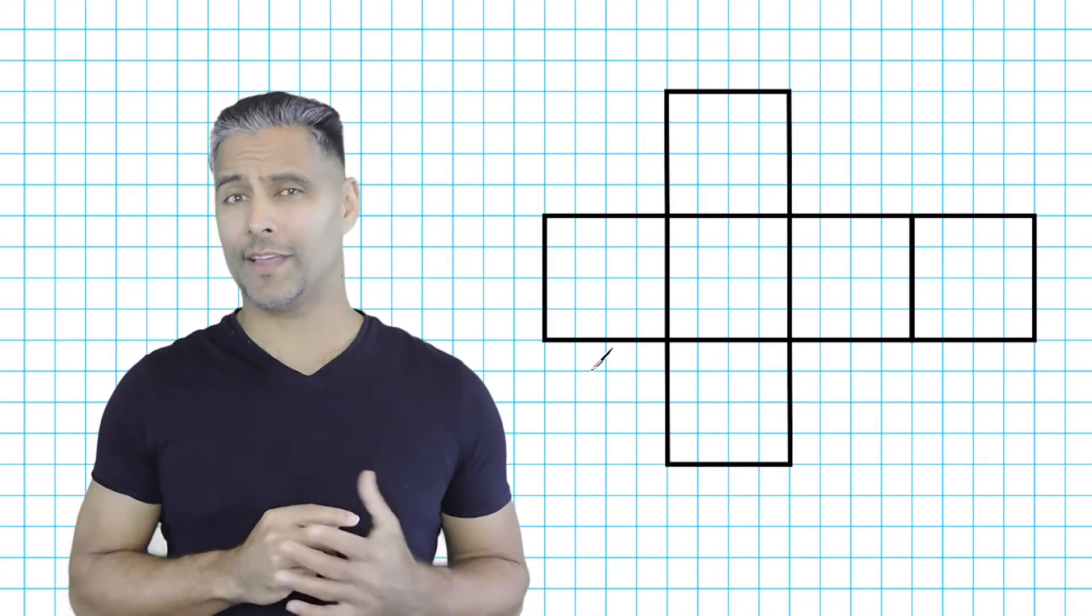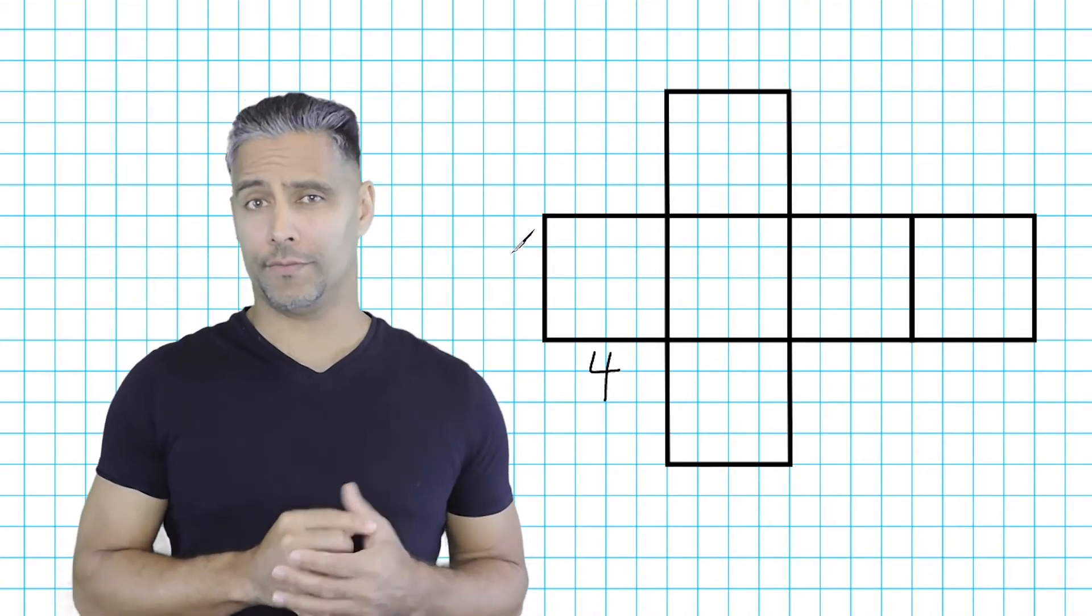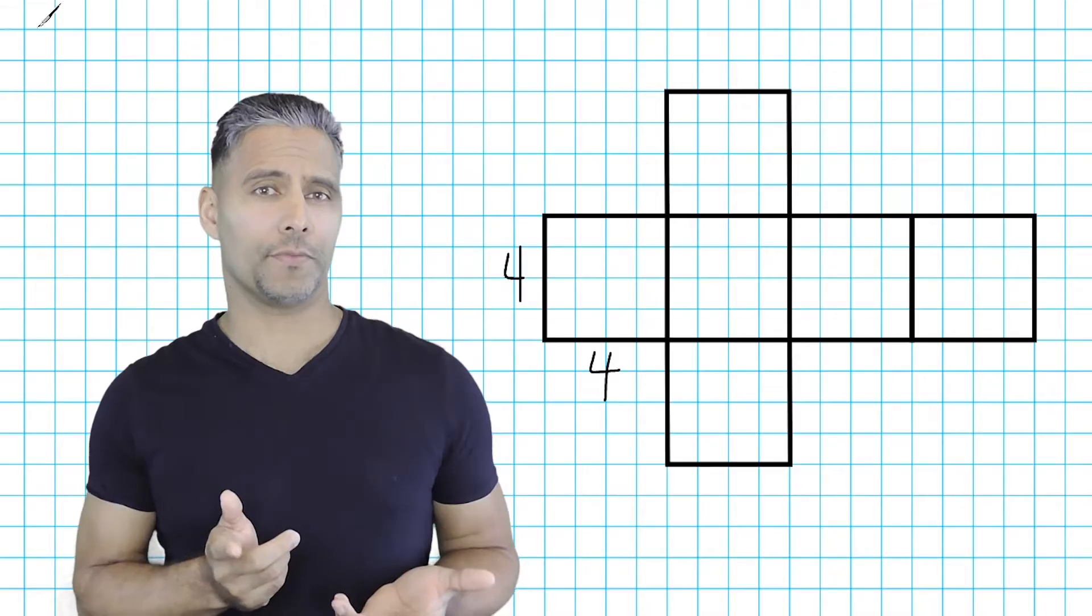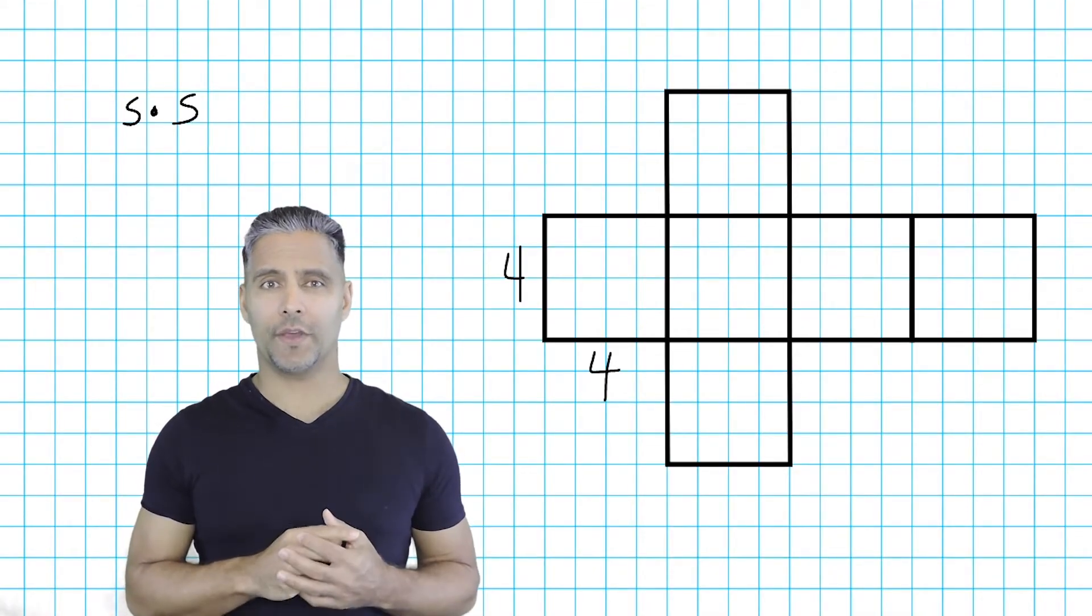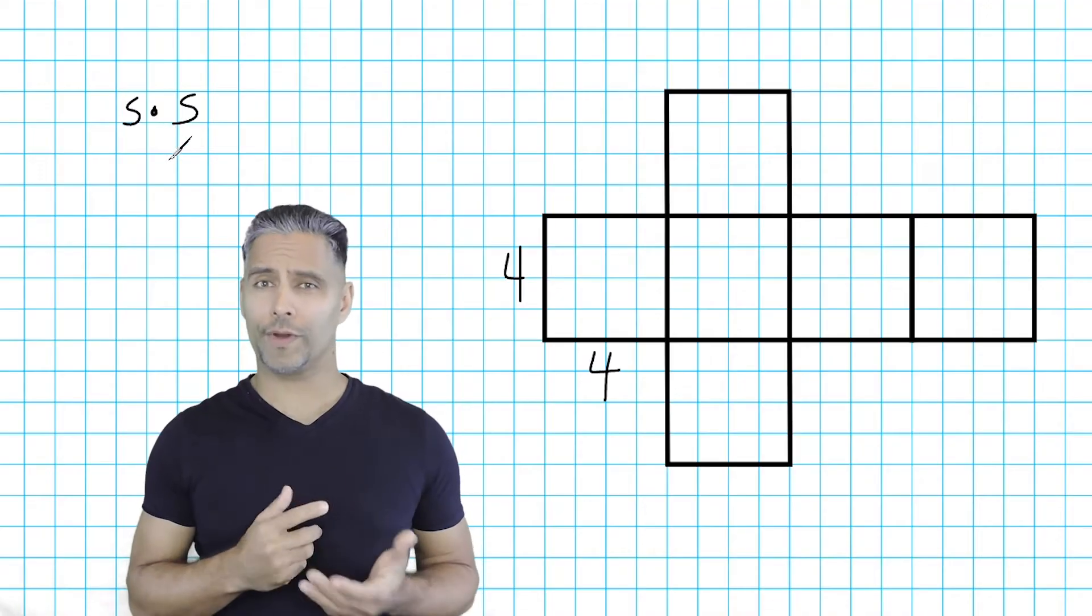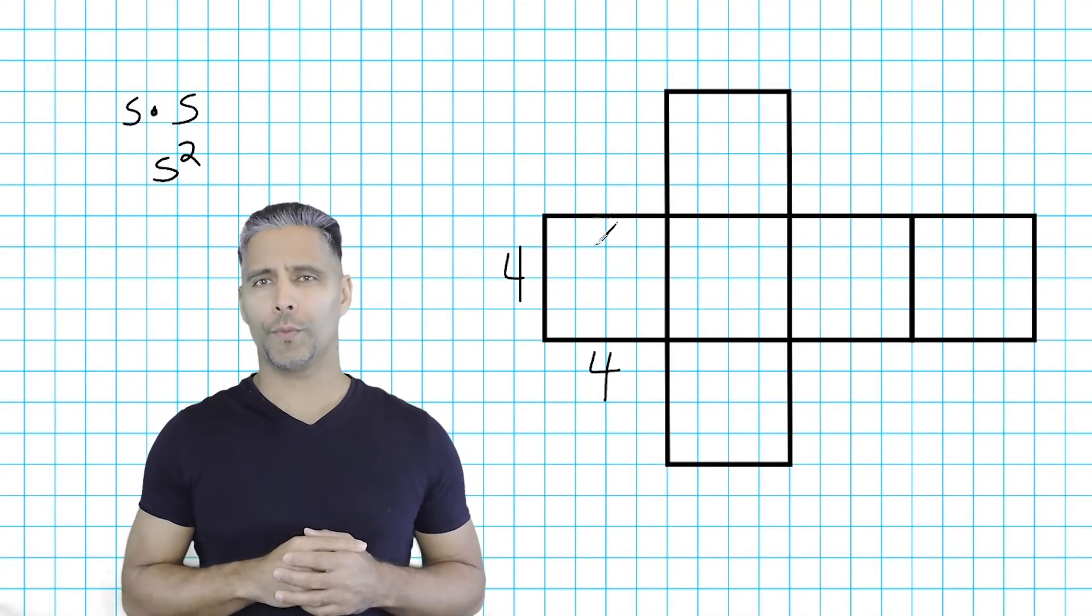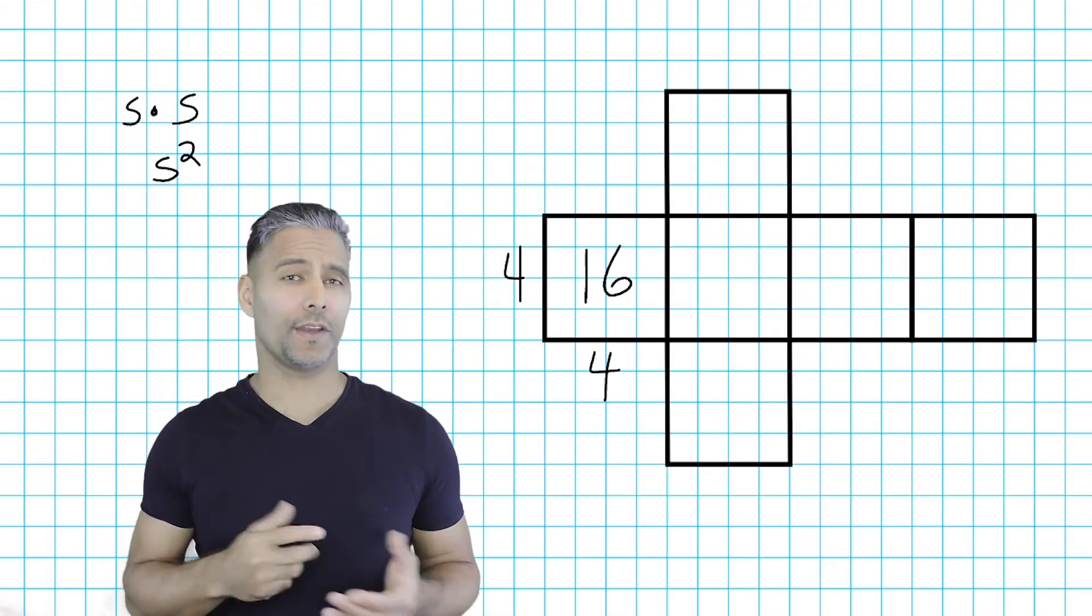This square right here has an edge length of 4. So, to find the area of this square, we multiply 4 by itself. Because we are multiplying the side length by itself, we can say that we are squaring the side length or raising it to the second power. Squaring 4 gives us an area of 16 square centimeters.